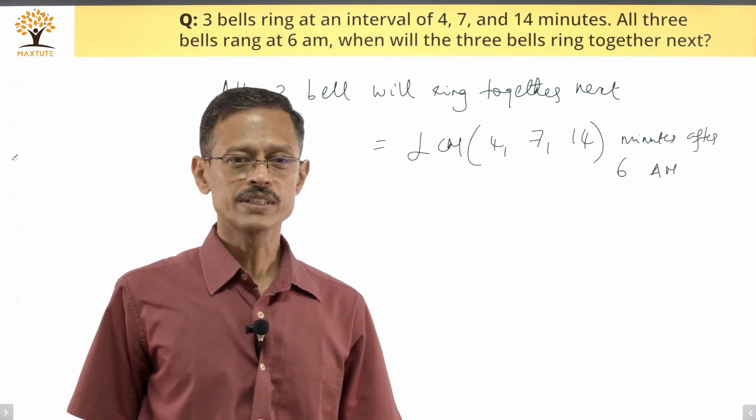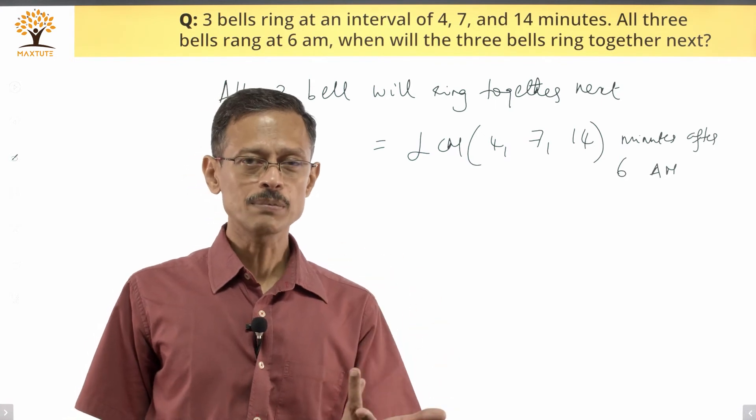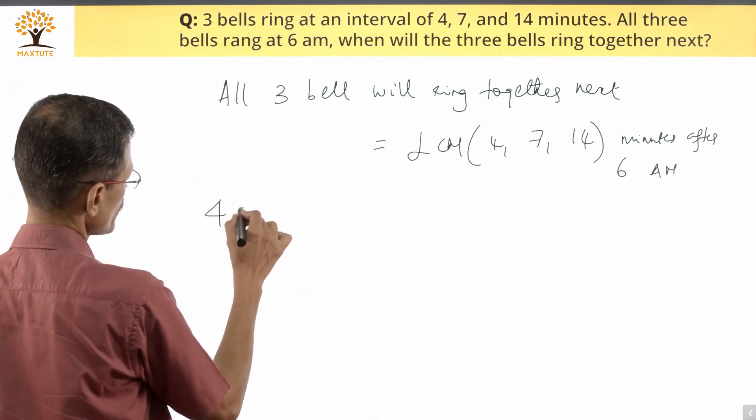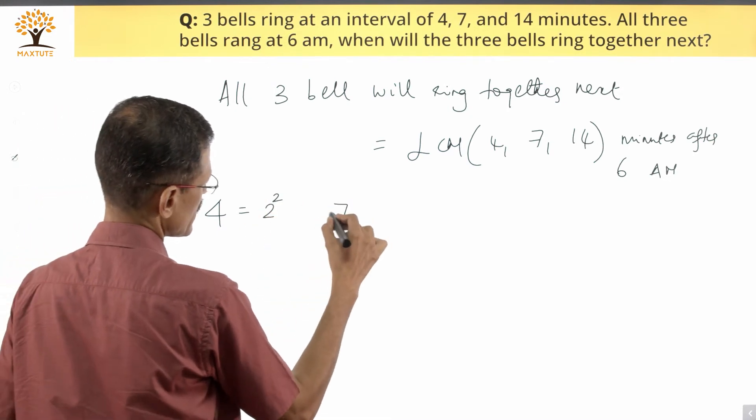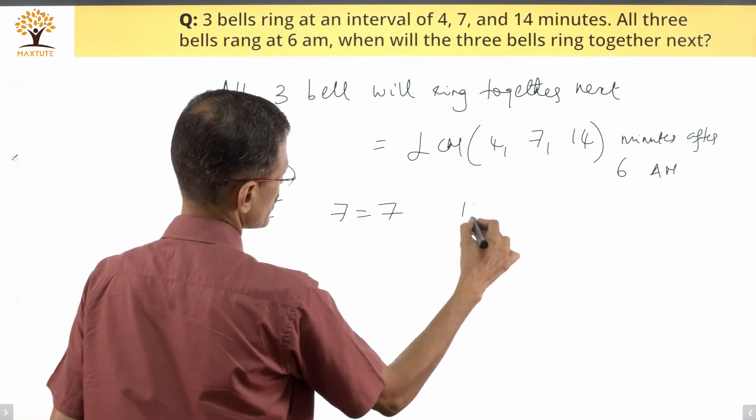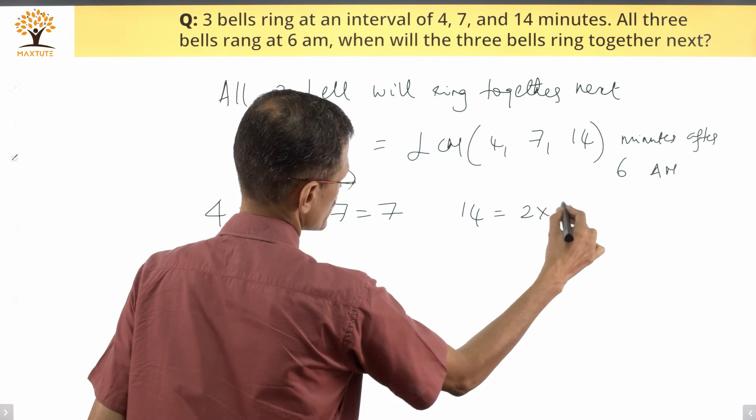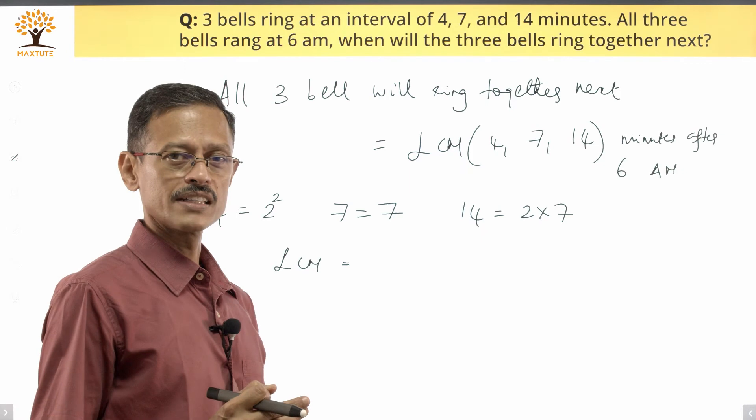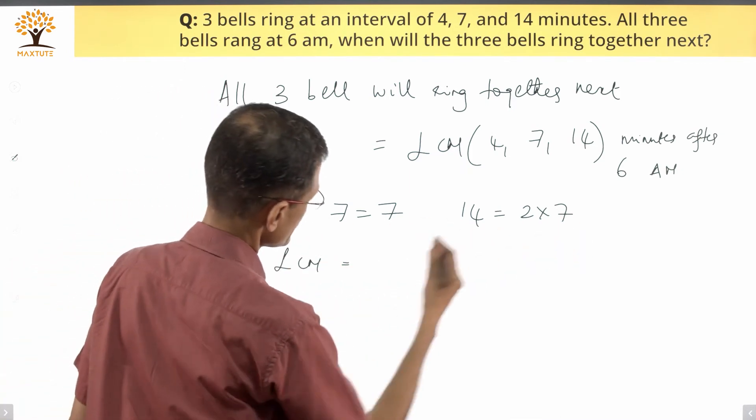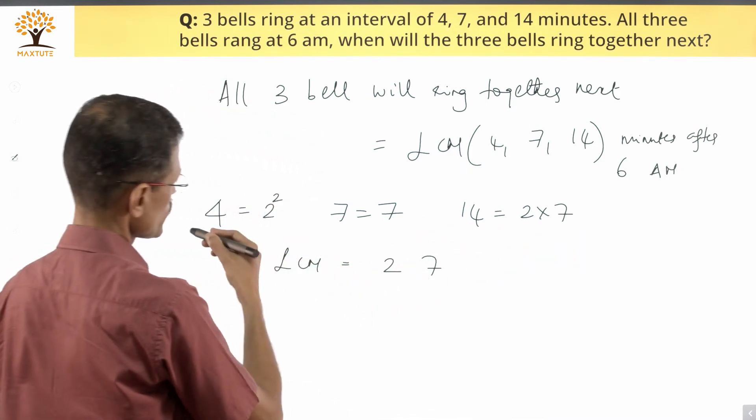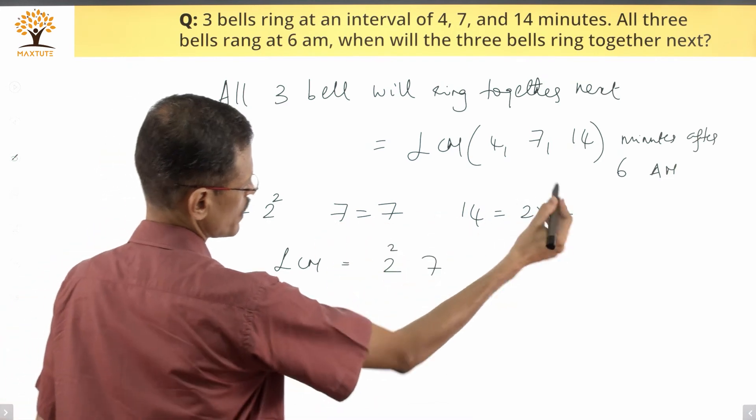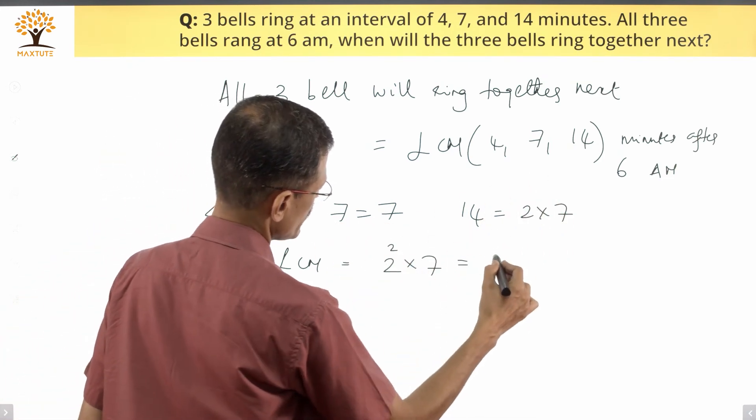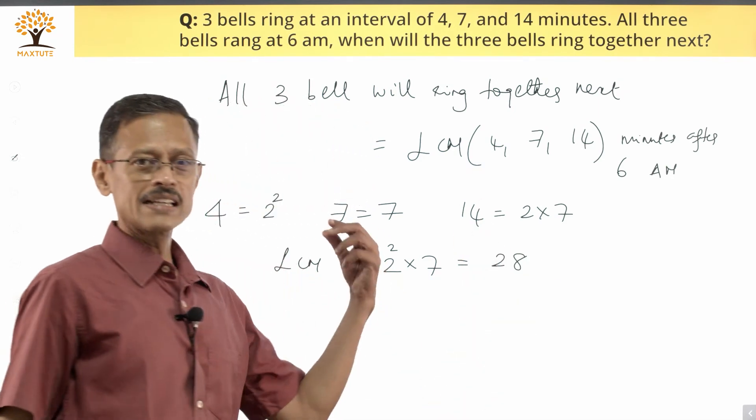Step number two, we're going to compute the LCM. We can compute the LCM in a couple of ways. We're going to be using the prime factorization method. Prime factor is 4, 4 is equal to 2 squared. Prime factor is 7, that's a 7. Prime factor is 14, that's equal to 2 times 7. LCM is nothing but the product of all prime factors in their highest power. The prime factors that we see are 2 and 7. The highest power of 2 is 2 squared. The highest power of 7 is 7 power 1. So 2 squared times 7, which is 4 times 7, which is equal to 28. LCM is 28.